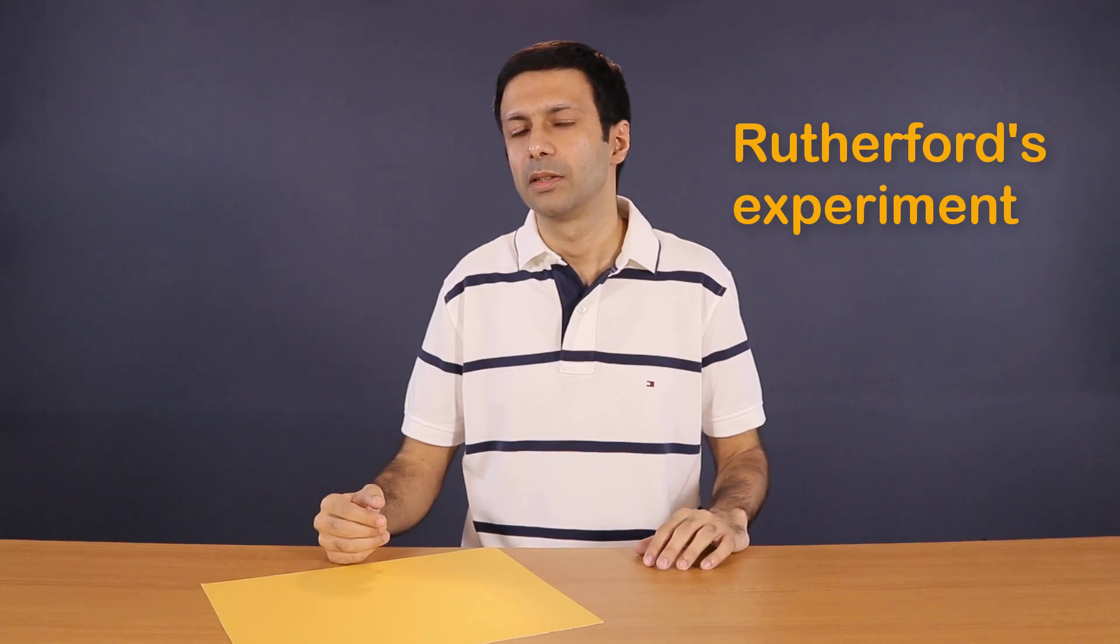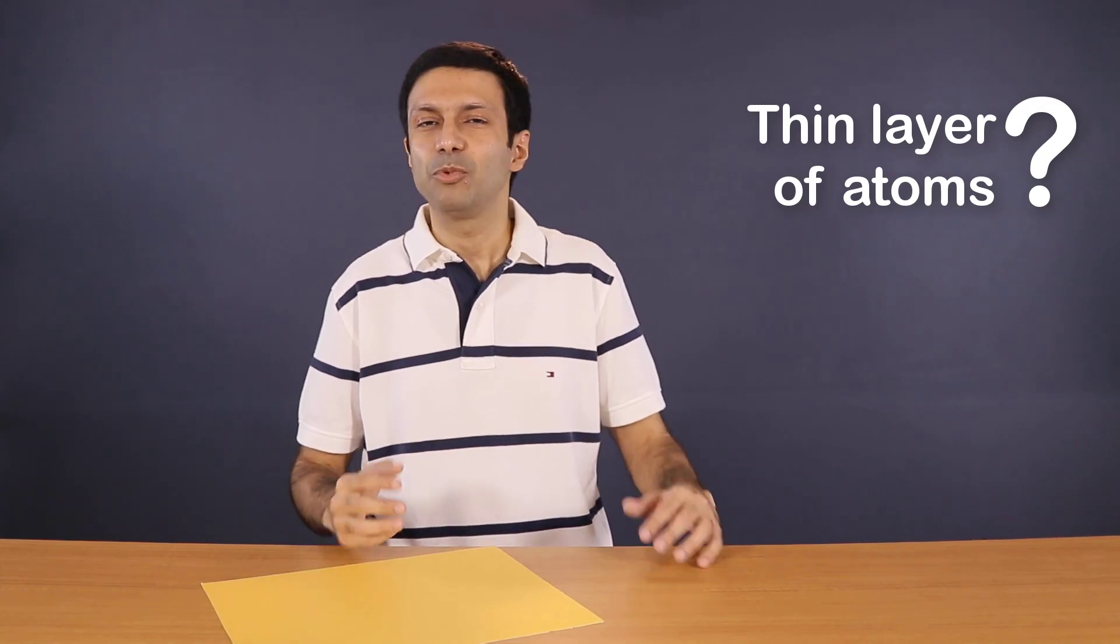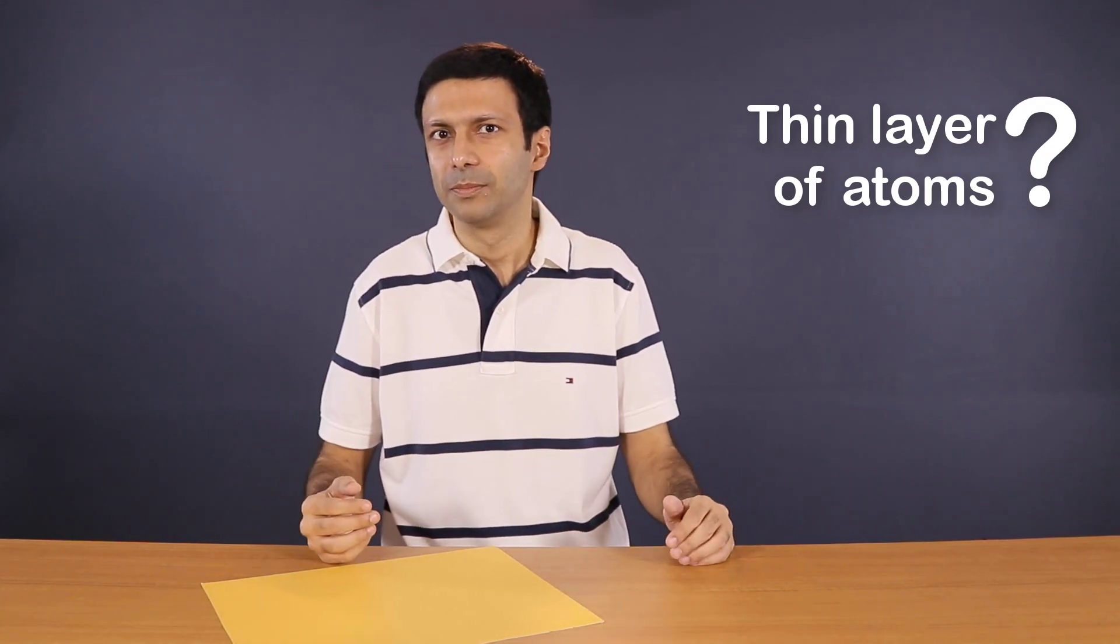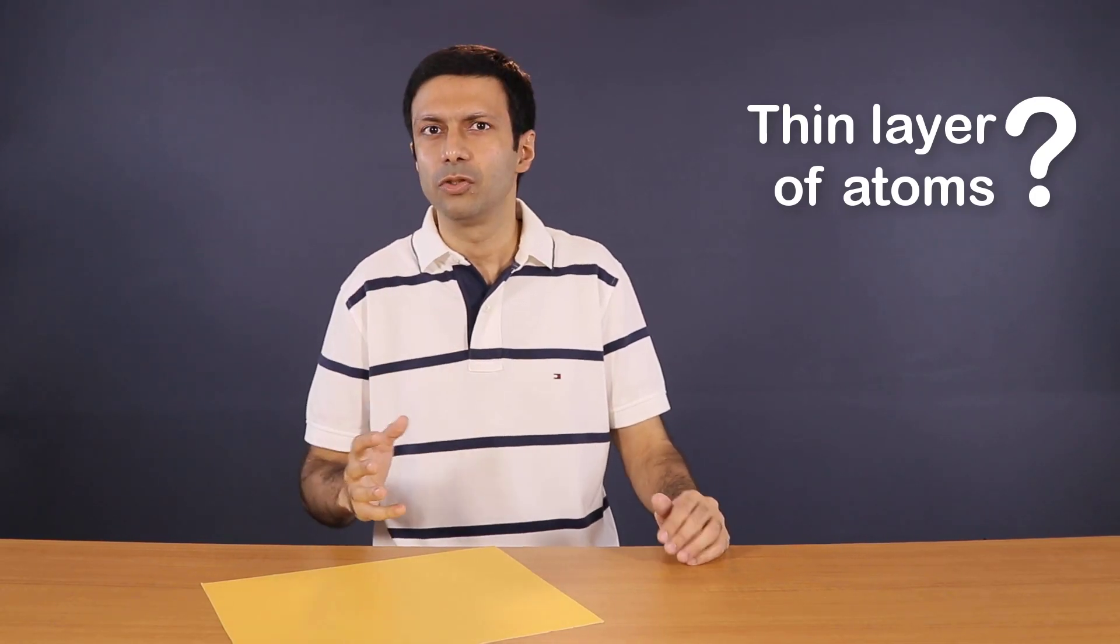That's refreshing. So let's take a look at what's the experiment he did. To analyze the structure of an atom, Rutherford and his students tried to bombard a thin layer of atoms with tiny charged particles. They wanted to study the deflection of these particles by the atoms. Now how did he get a thin layer of atoms? I'm sure you've seen an aluminum foil. So that's pretty thin, right? Like the ones used in the kitchen to wrap food.